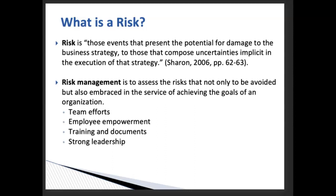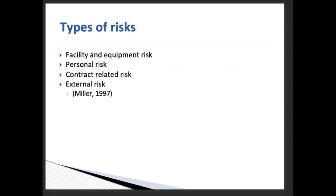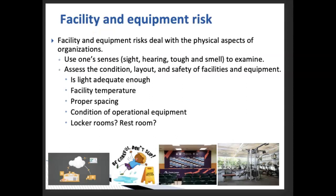In organizations, we are exposed to all different levels of risk. We can classify all risk based on Miller's strategy into four categories: facility and equipment risk, personal risk, contract-related risk, and external risk. We're going to look at each one by one.